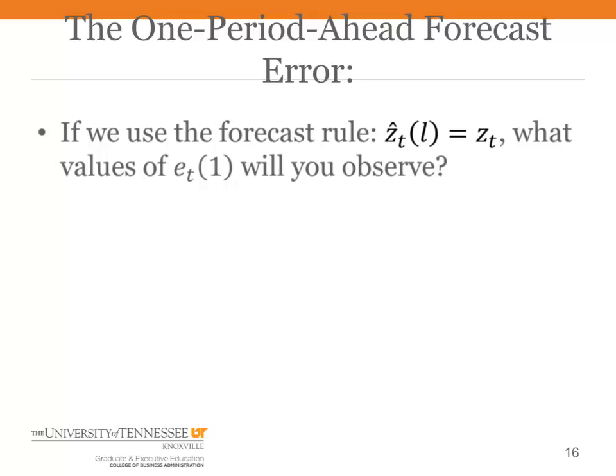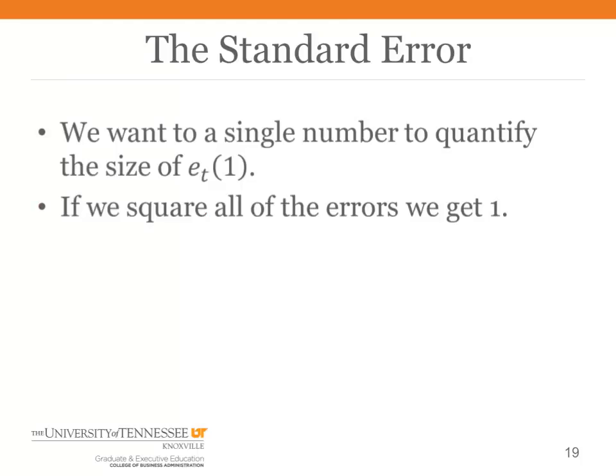Let's focus on the one-period ahead forecast error. It will always be either plus one or minus one. That will be E sub T parenthesis one. For example, in period one we forecast that 30 will be the outcome in period two. In period two, if we observe 29, then E sub one parenthesis one is minus one — 29 minus the forecast of 30. The measure of forecast quality we will use is the standard deviation of the one-period ahead forecast errors, and we call that number the standard error. Ordinarily when you compute a standard deviation you measure deviations from an average, but in time series we measure deviations from zero, and we call that the standard error.